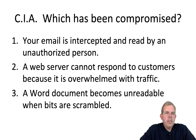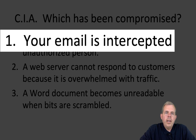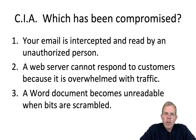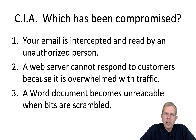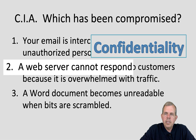Let's do a short quiz. CIA — which one of these three is being talked about? Number one: your email is intercepted and read by an unauthorized person. Is that a C, I, or A — a confidentiality issue, an integrity issue, or an accessibility problem? If you answered confidentiality, you're correct. We want to make sure only certain people get to see the results.